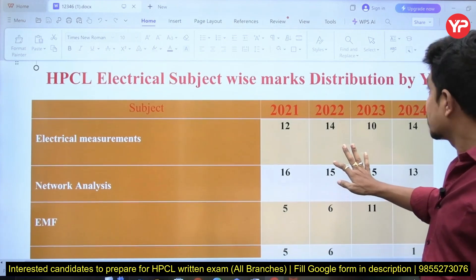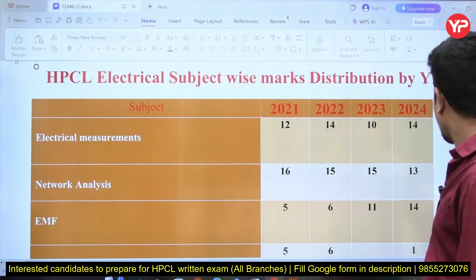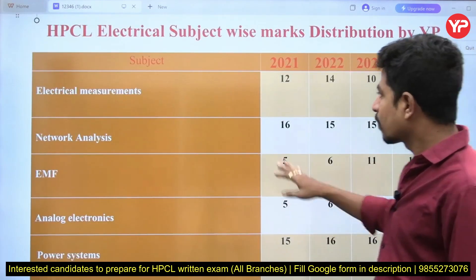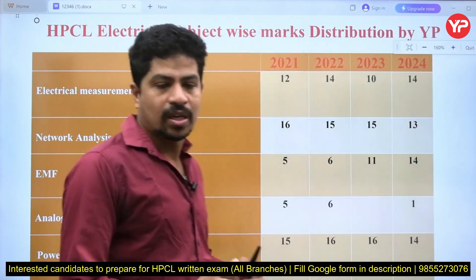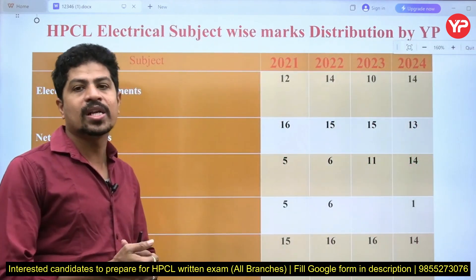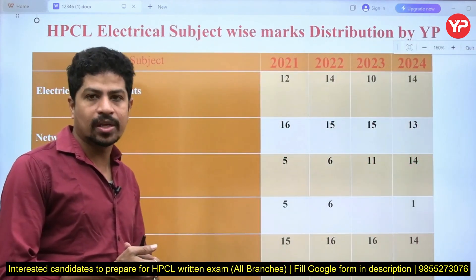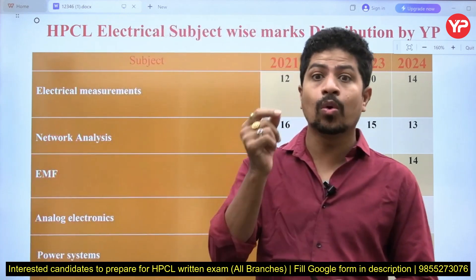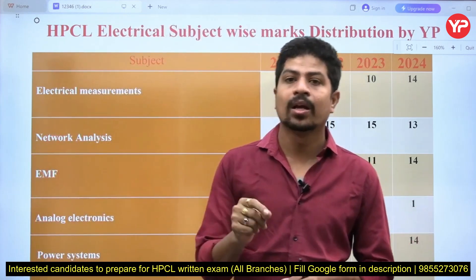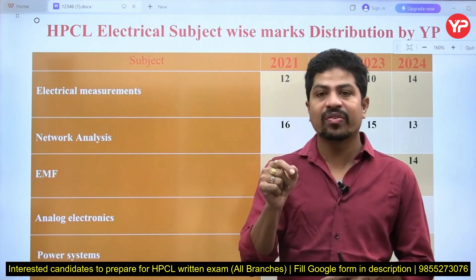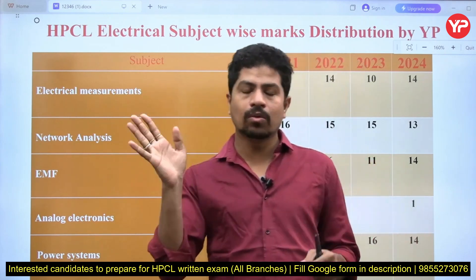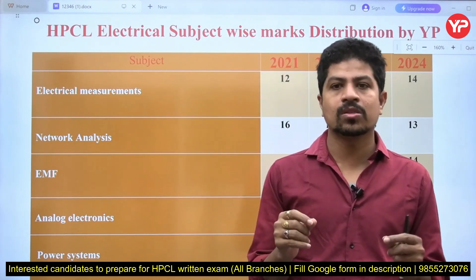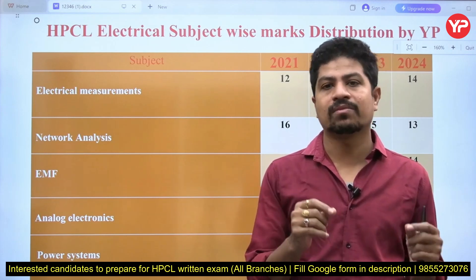Digital electronics, microprocessors, and other miscellaneous subjects keep changing in weightage. But the key takeaway from this overall analysis is that the very important subjects for HPCL are electrical measurements — which most candidates ignore for GATE — and EMF, where only simple questions are asked. Don't think tough questions will come from EMF.